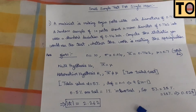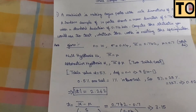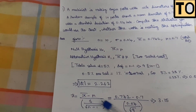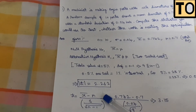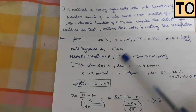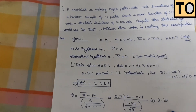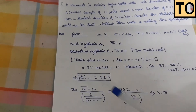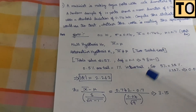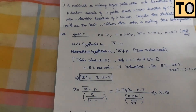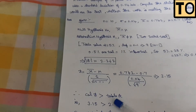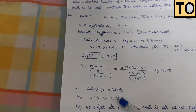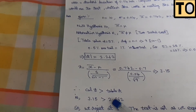This is the formula for the small sample test for single mean: t equals x bar minus mu, divided by s divided by the square root of n minus 1. Substituting the values, we get t equal to 3.15. Since 3.15 is greater than the table value, we reject H0 at the 5% level of significance.